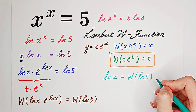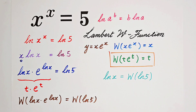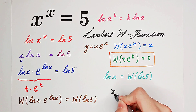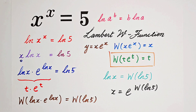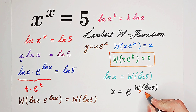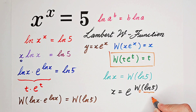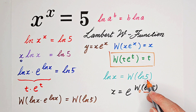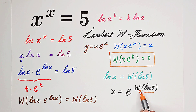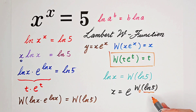The Lambert W function of a constant is a constant, so the left-hand side is an elementary function and the right-hand side is a constant: the natural log of x equals a number. So x is e to the power of the Lambert W function of natural log of 5. If you simply want to find the real solutions, you can add a 0 here, because the Lambert W function has many branches. Since the natural log of 5 is greater than 0, the Lambert W₀ function of the natural log of 5 provides only one real result. If you want all the complex solutions, just write W of the natural log of 5.